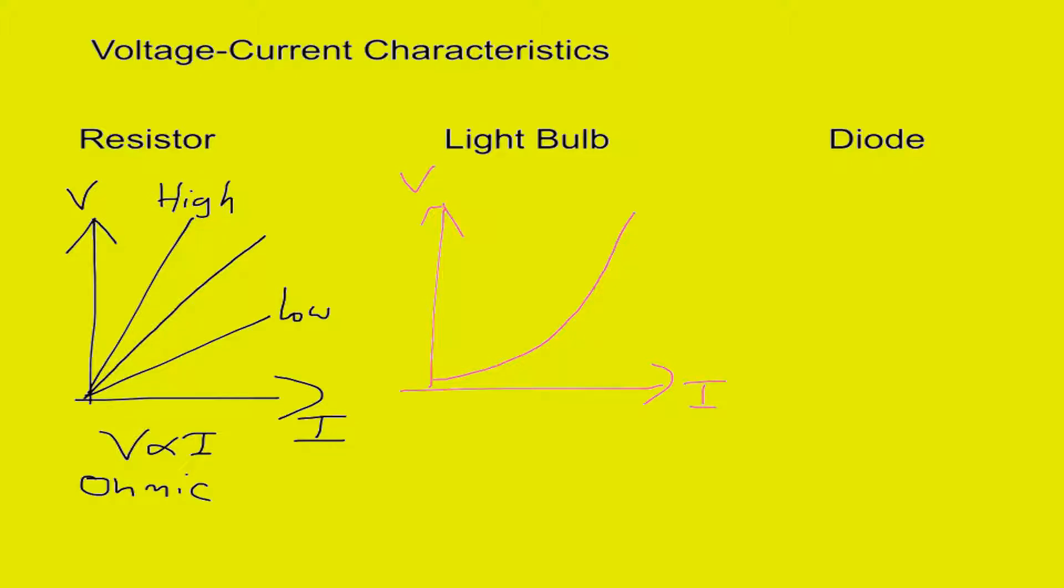Starting off at the origin but then increasing its gradient as it goes up. And in this case, you need to be careful. The resistance does not equal the gradient. You would simply divide voltage by current to find it at any point.